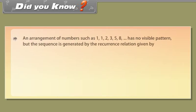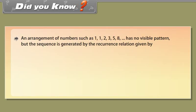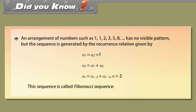Did you know? An arrangement of numbers such as 1, 1, 2, 3, 5, 8, and so on has no visible pattern, but the sequence is generated by the recurrence relation: a1 = a2 = 1; a3 = a1 + a2; an = an−2 + an−1 for n > 2. This sequence is called the Fibonacci sequence.